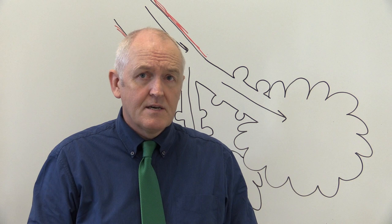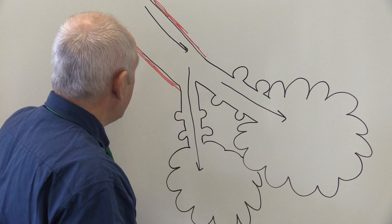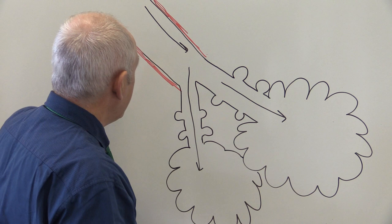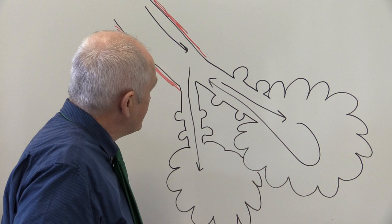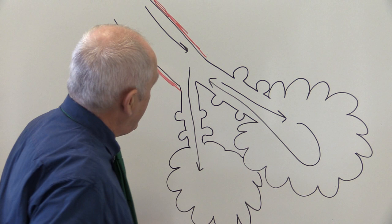Air goes into the alveoli during breathing in, and then the air goes out during expiration. So we've got air going in and out of the alveoli all the time, refreshing the air in the air sacs. The walls of the alveoli are very thin — they're thin-walled structures.